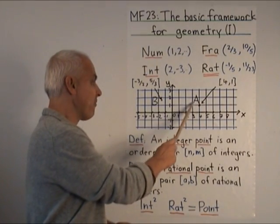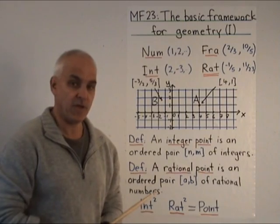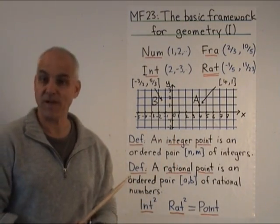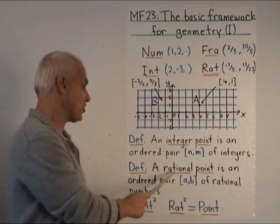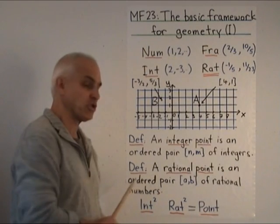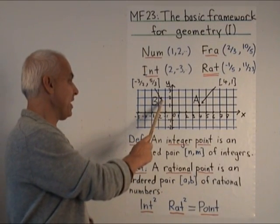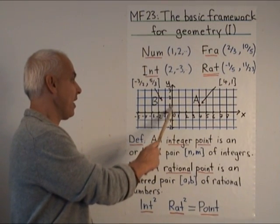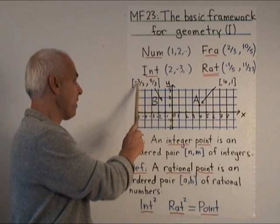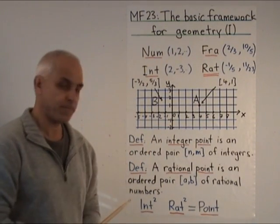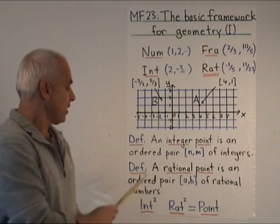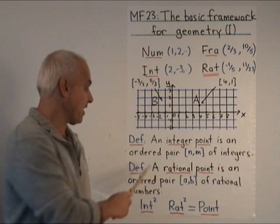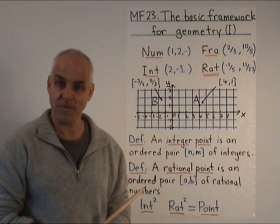However, we don't just want to have points which are on the intersections of these lines. We want to have also points which are in between. So for that we need a more flexible notion of a rational point. So a rational point for us is an ordered pair AB of rational numbers. For example, this point B here, which is about minus 3 halves over this way, and 5 thirds up, is represented by the ordered pair minus 3 over 2, 5 over 3. So although we are motivated by this picture of a piece of graph paper, the actual definitions are independent of these pictures.